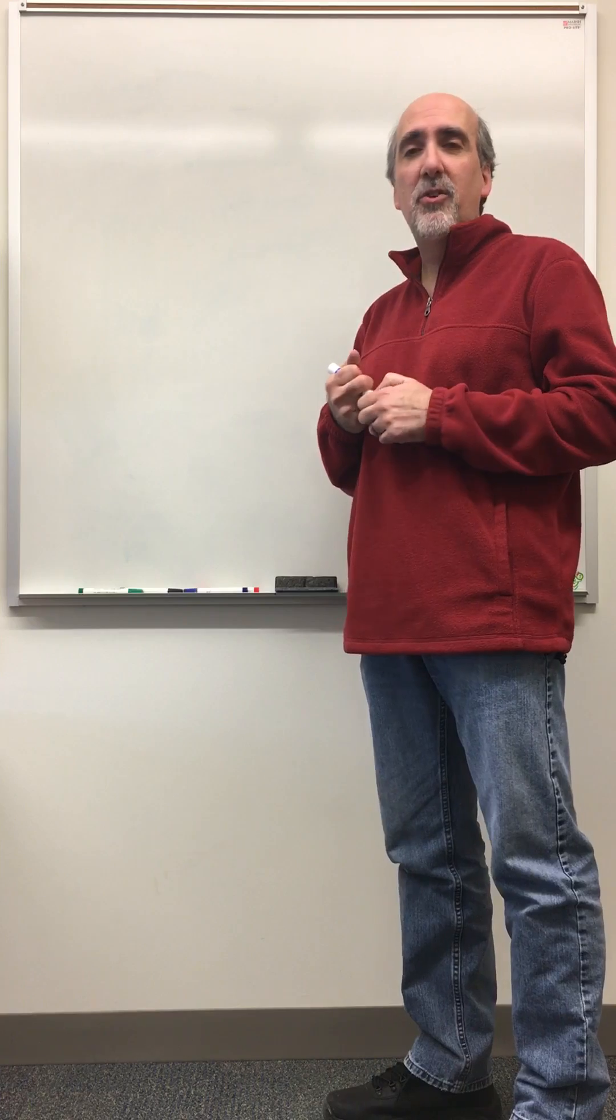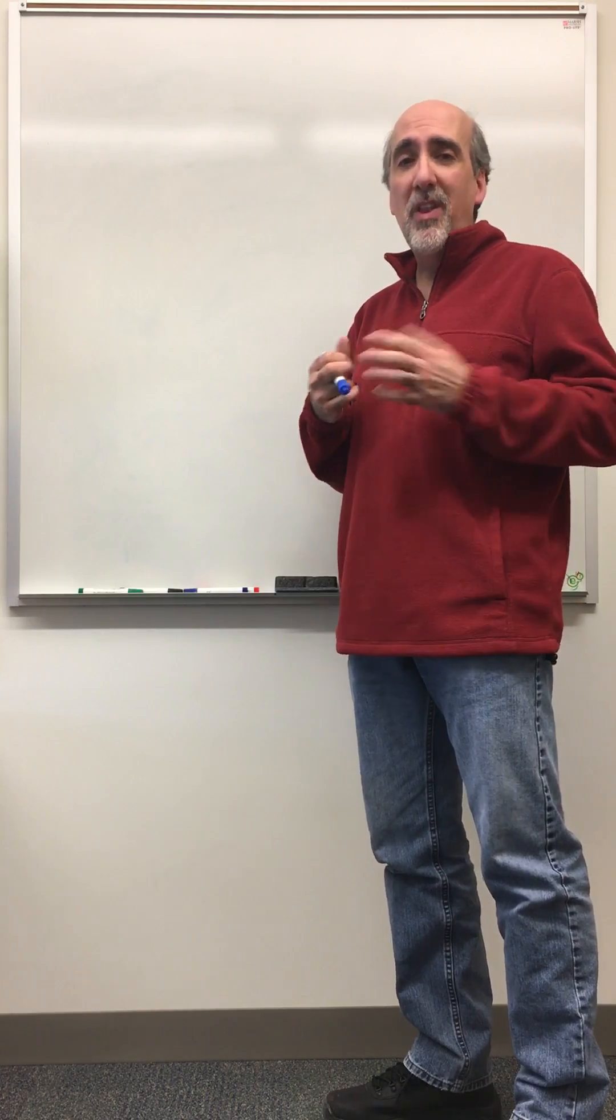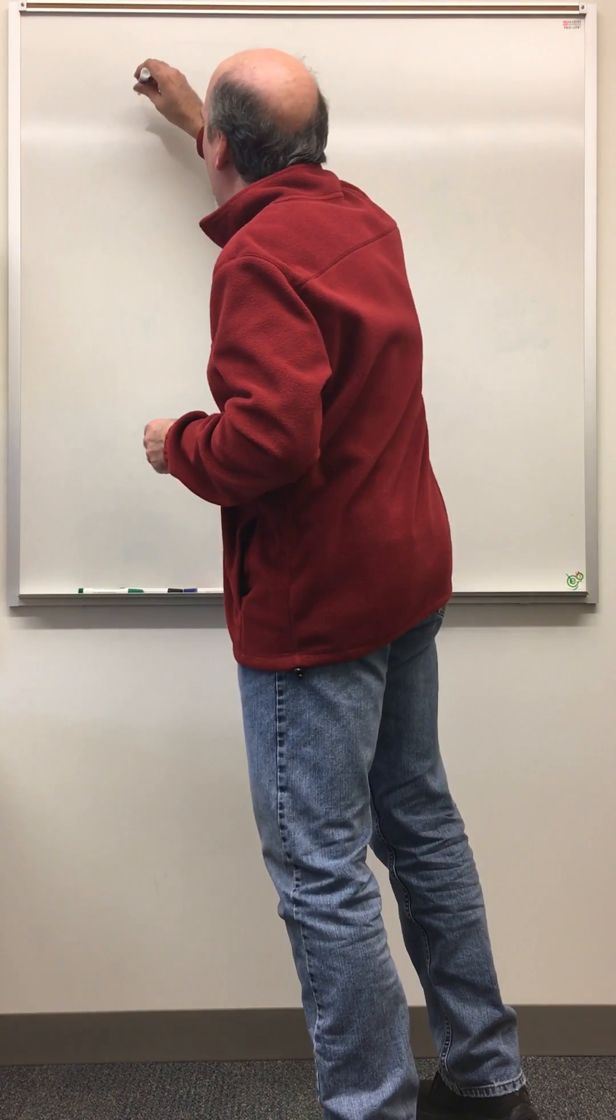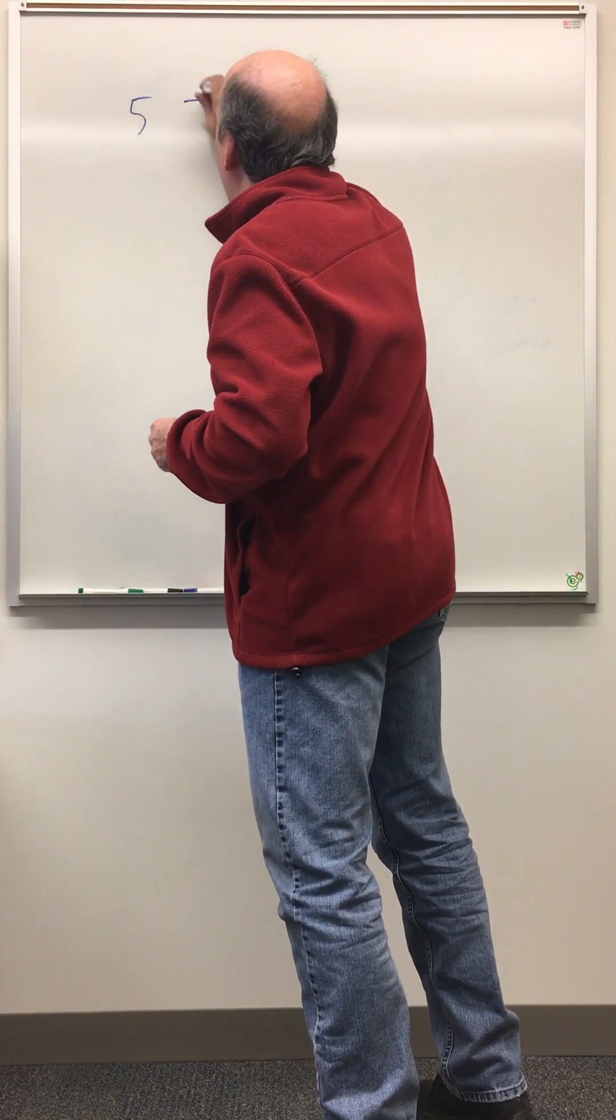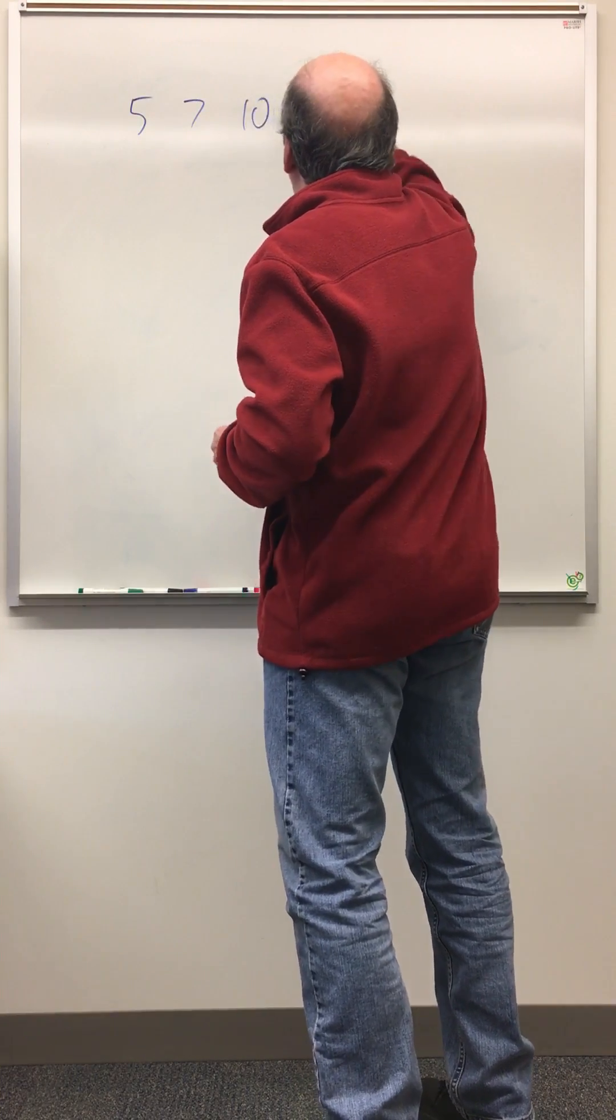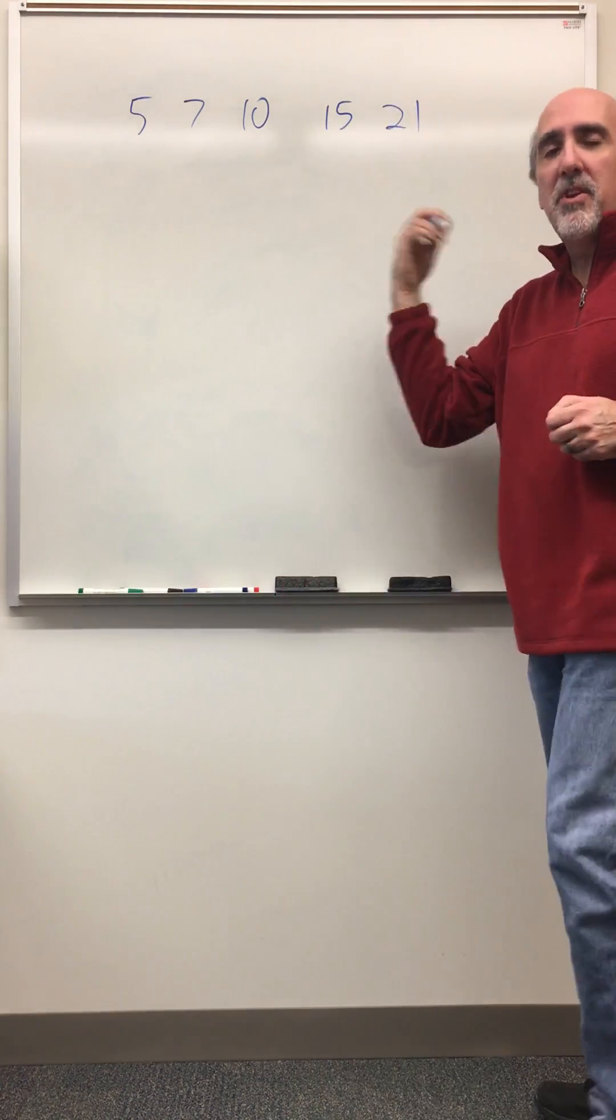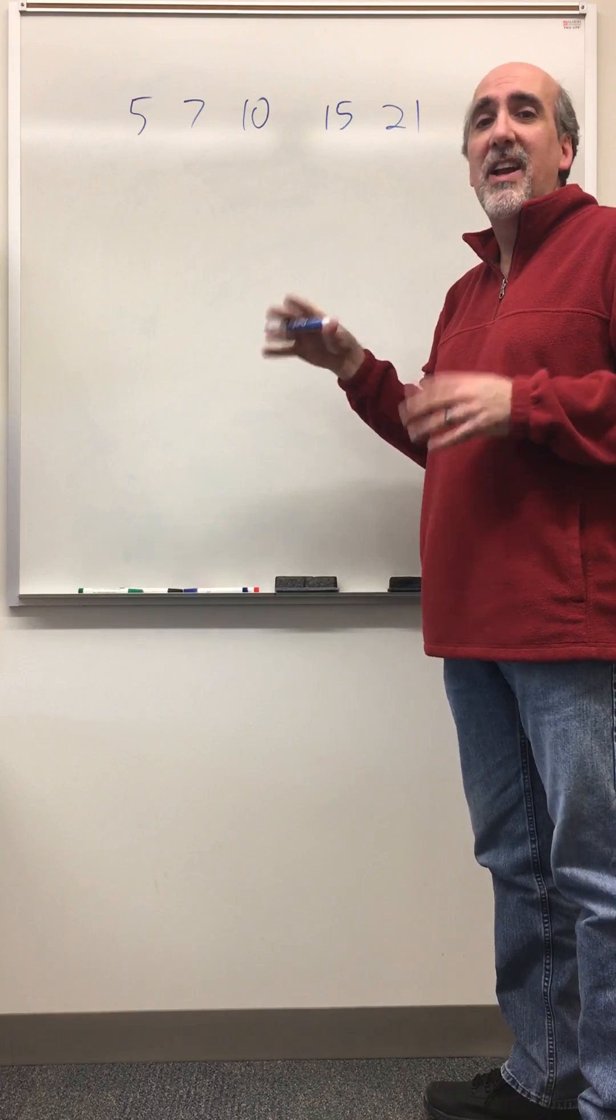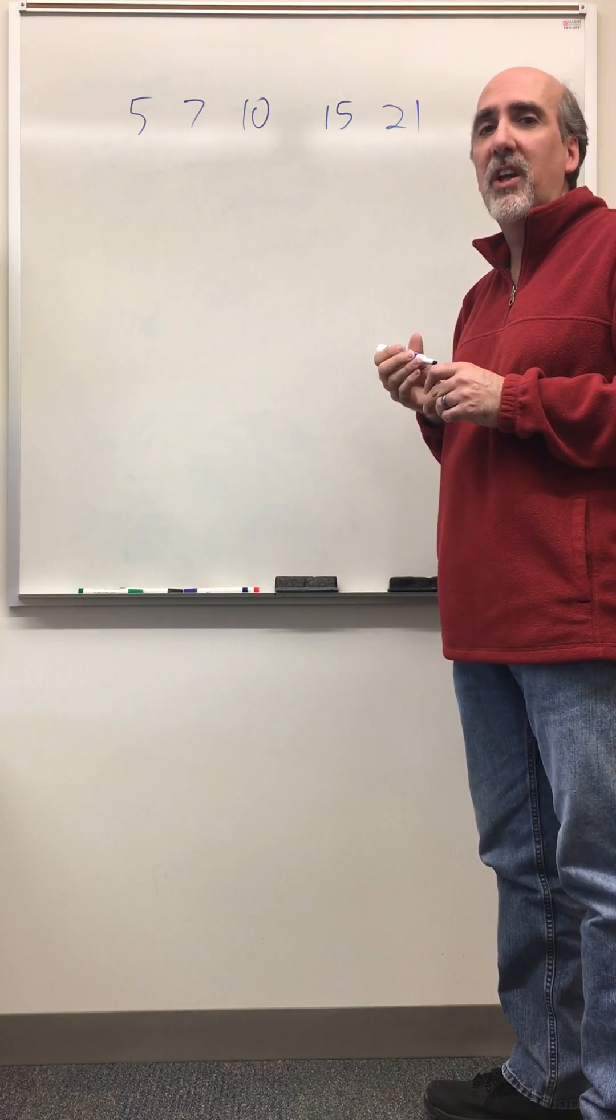But you don't know that unless you save all the data. So one thing we could do is we could keep all the data that we want. Like I just said, 5, 7, 10, let's say 15, 21. And I could keep this in a vector. I could sort it. Every time I add things to it, I could sort it. And I'd spend way too much time sorting it.